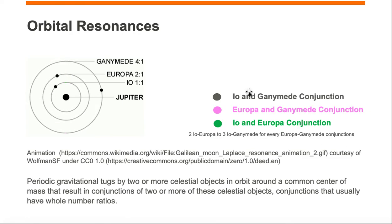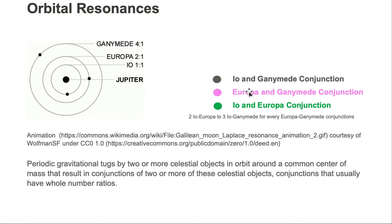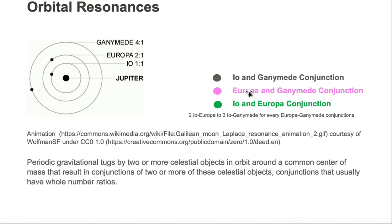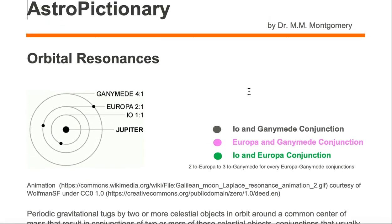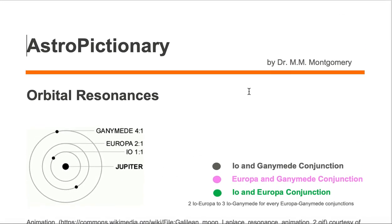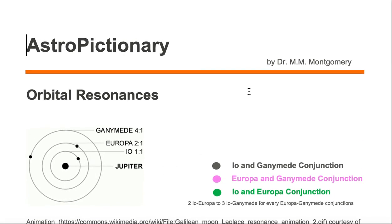Whenever we have gravitational tugs by these close objects, they end up in conjunctions, and those conjunctions occur in ratios of whole numbers. This is what we mean by orbital resonances.